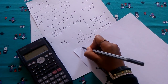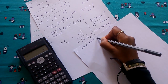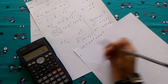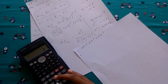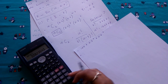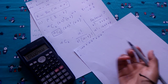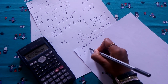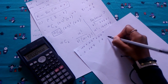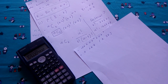So we have 120 × 0.3^3 × 0.7^7. Using the calculator, working backwards: 0.7^7, then multiply by 0.3^3, then multiply by 120. The answer is 0.267 to 3 significant figures. That is the answer for part one.